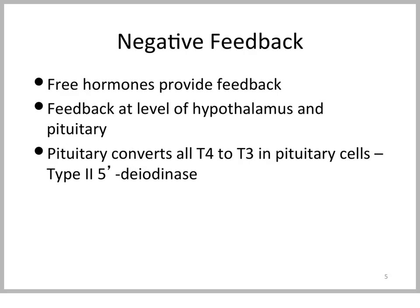In summary of the major points: free T4 and free T3 provide negative feedback at the pituitary and hypothalamic levels. The pituitary is primarily looking for free T4 and converts most, if not all, of it to T3. It is that T3 inside the thyrotrope pituitary cell that inhibits TSH secretion.